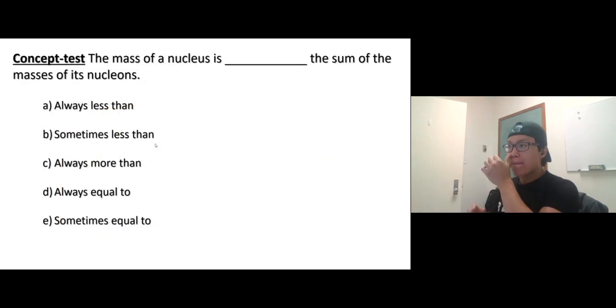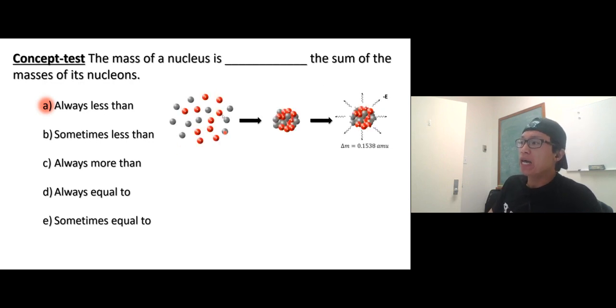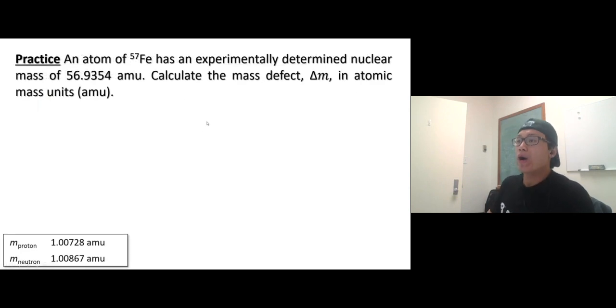All right, let's answer this real quick. The mass of a nucleus is blank the sum of the masses of its nucleons. Which one? Don't think first. Always less than the sum of the mass of the nucleons, because of the mass defect. When all the nucleons come together to form a nucleus, they lose some mass. So the mass of the nucleus is always less than the sum of the masses of the nucleons. The masses of the nucleons means all protons and neutrons combined.